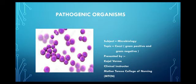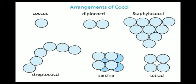Cocci is a bacteria that is round in shape. This is the arrangement of cocci. Diplococci means arrangement of two cocci. Staphylococci means arrangement of cocci in a grape-like structure. Streptococci means arrangement of cocci in a chain-like structure. Sarcina refers to a structure that looks like a square of 8, and tetrad is the cocci arrangement that looks like a square of 4, as we can see in the figure.